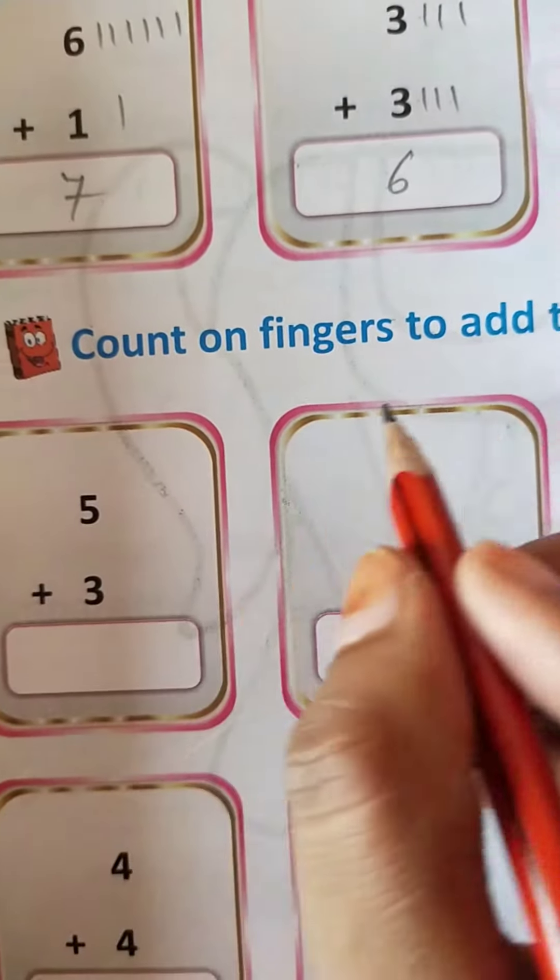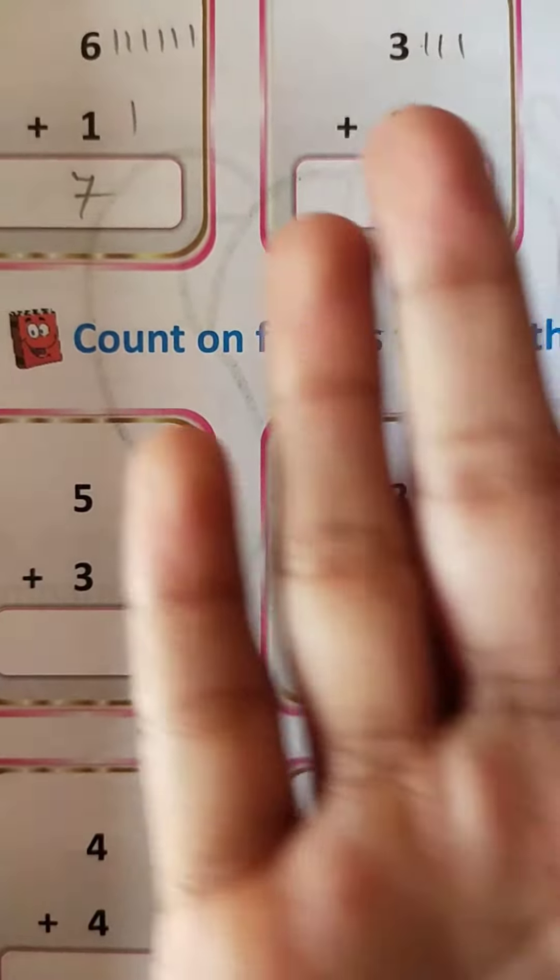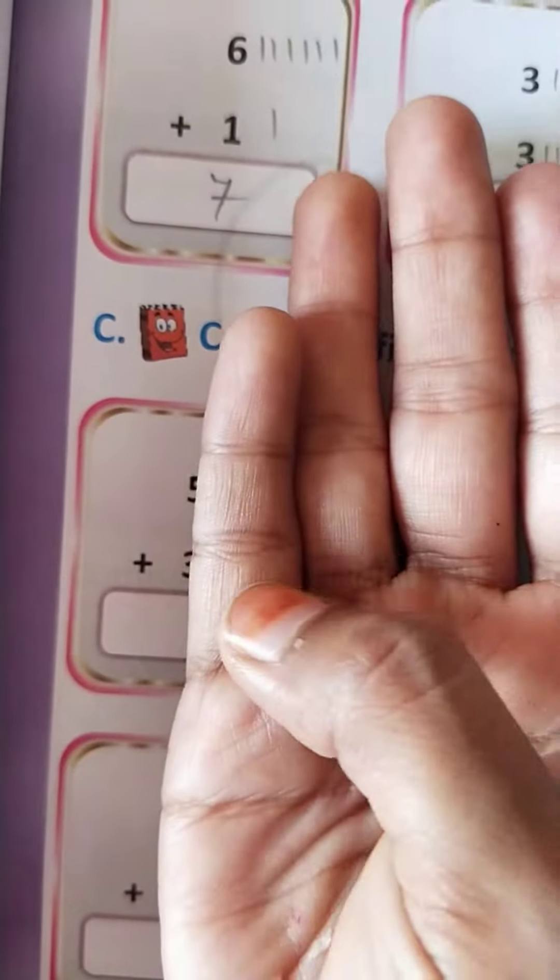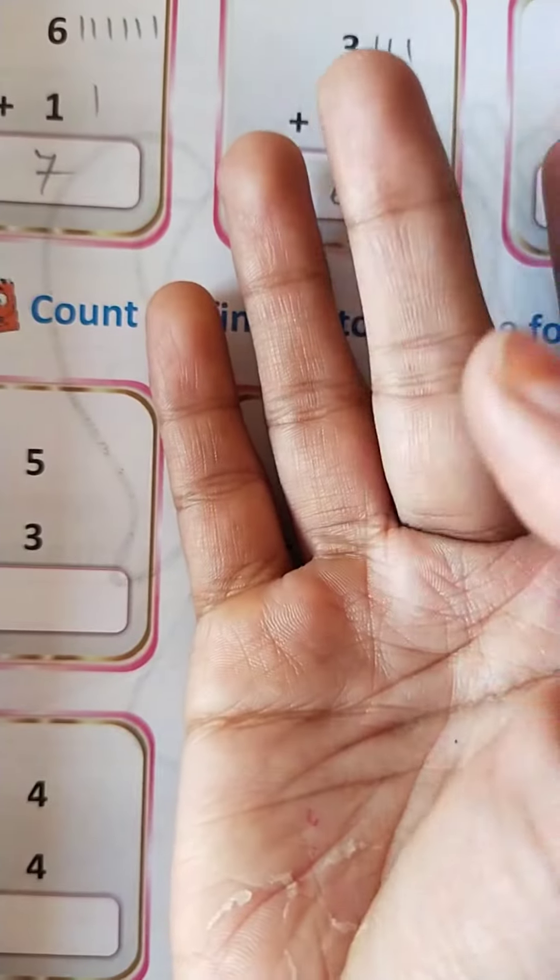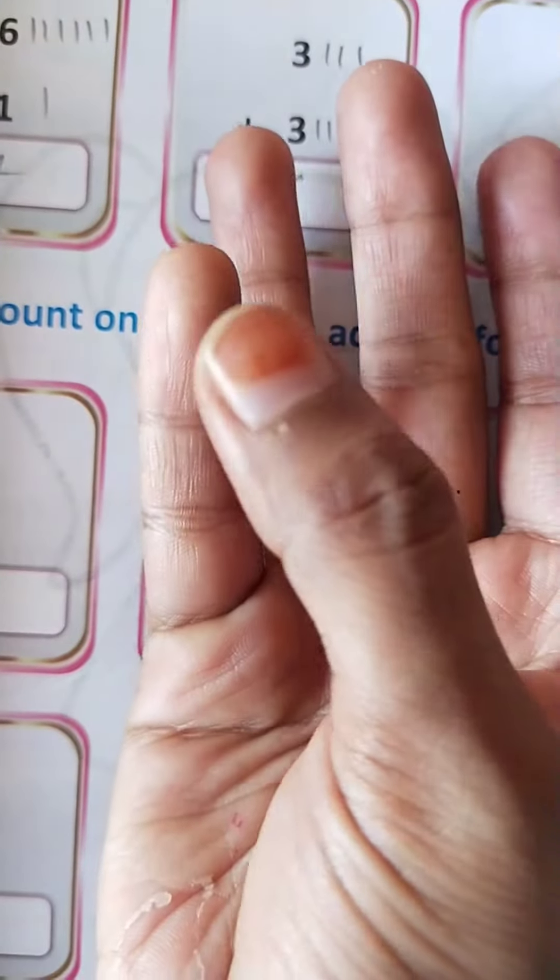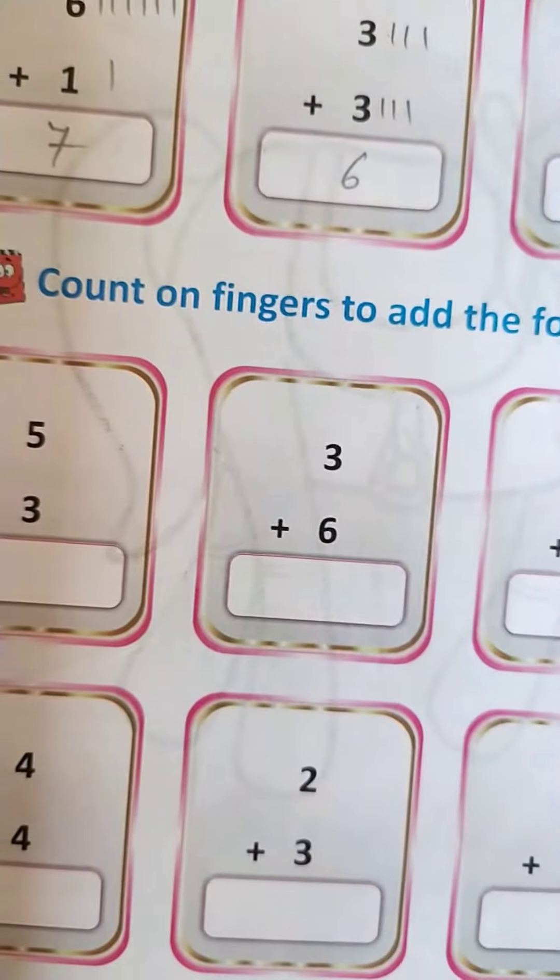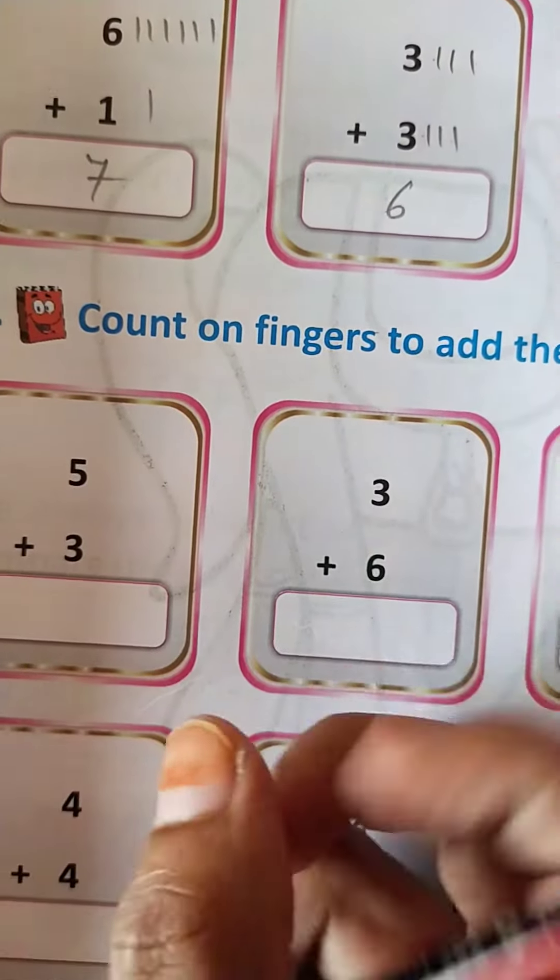Here students 5. Now you will count the fingers. Here now students, you will count the fingers. 1, 2, 3, 4, 5. And here 3 students. 1, 2, 3. Now you will count all. 1, 2, 3, 4, 5, 6, 7, 8. So you will write 8 here.